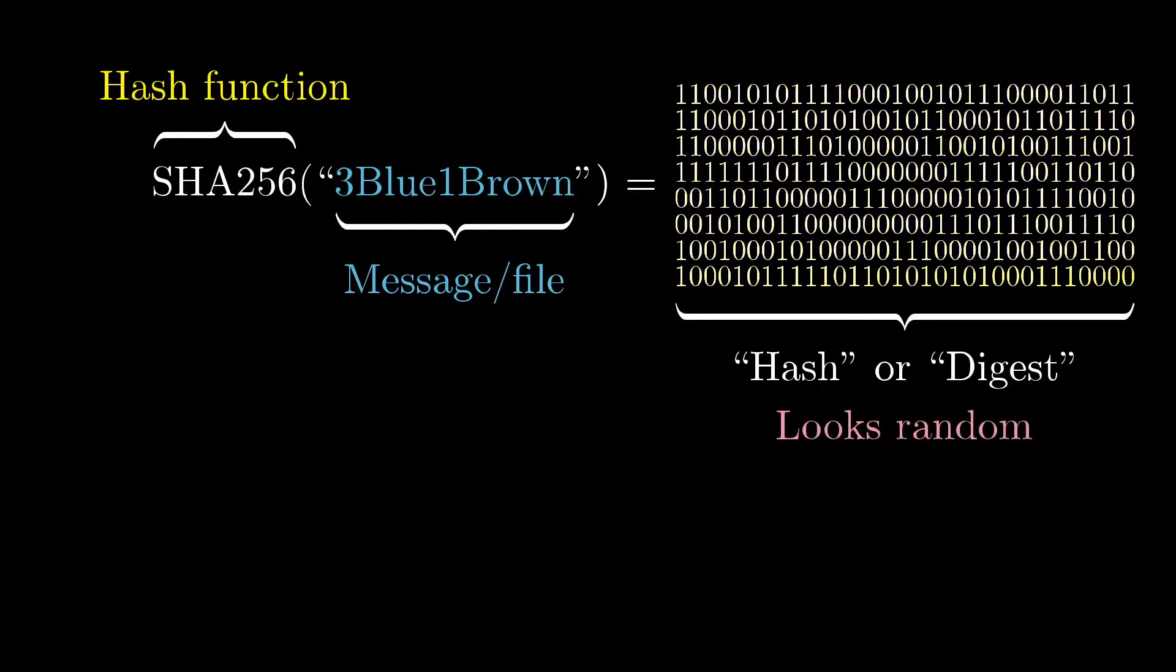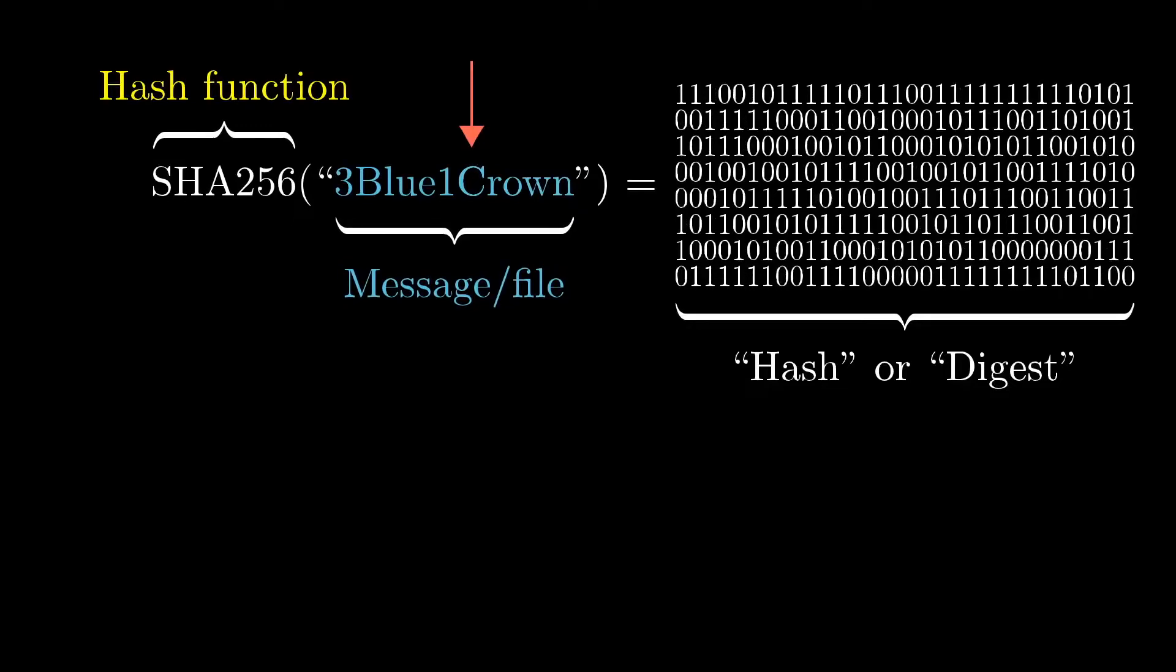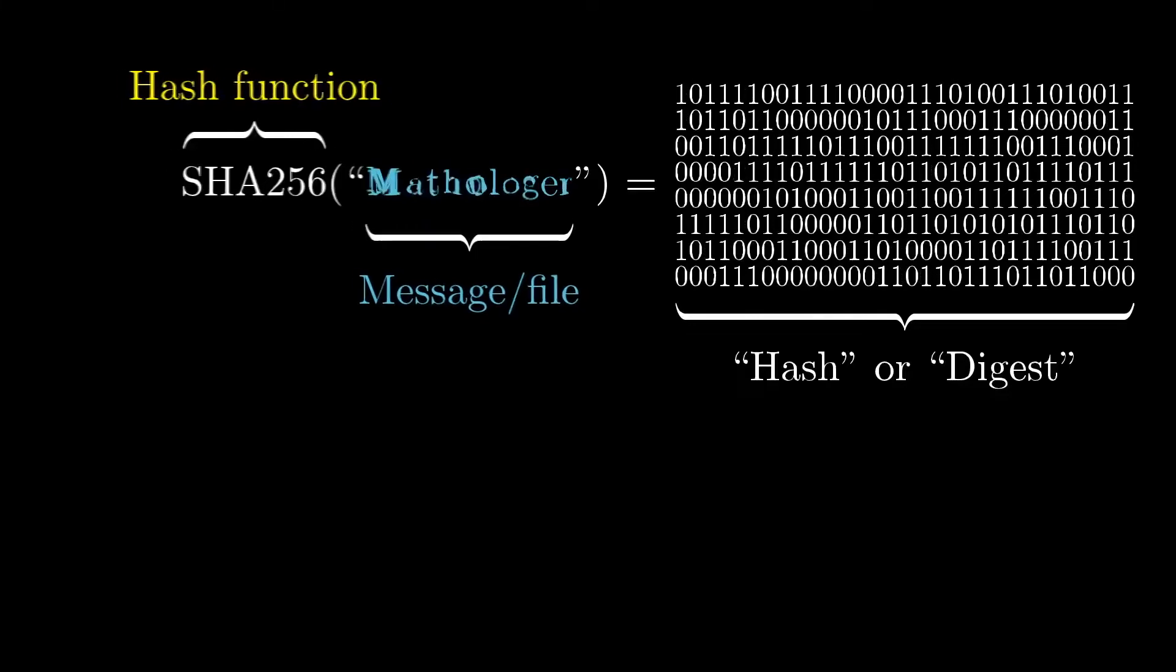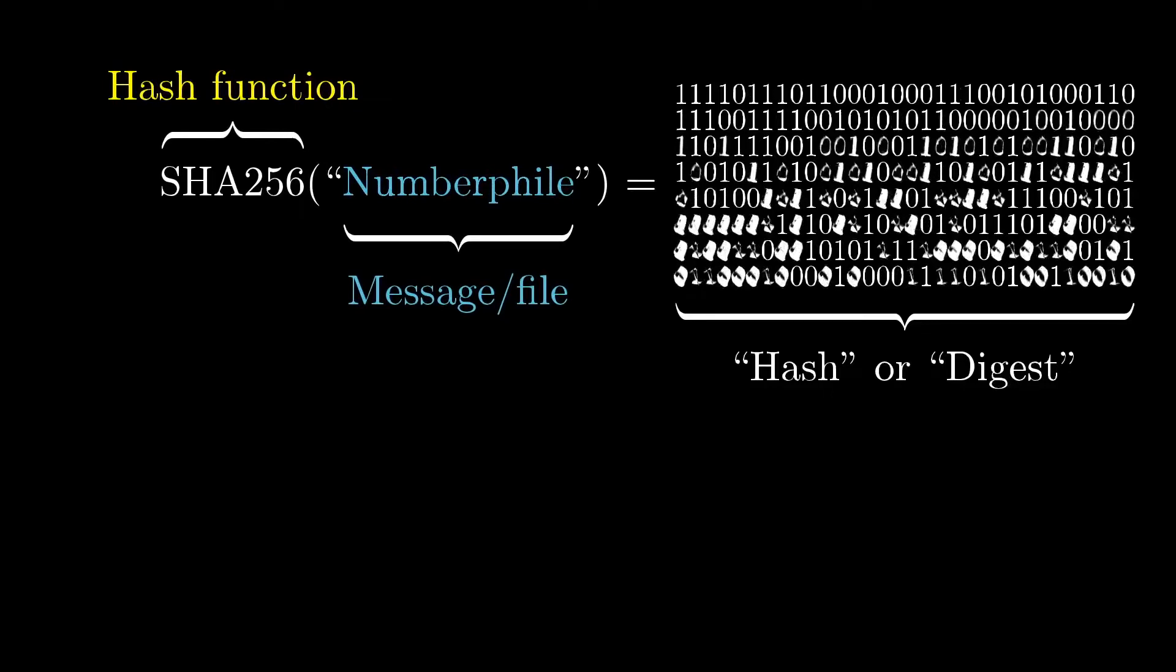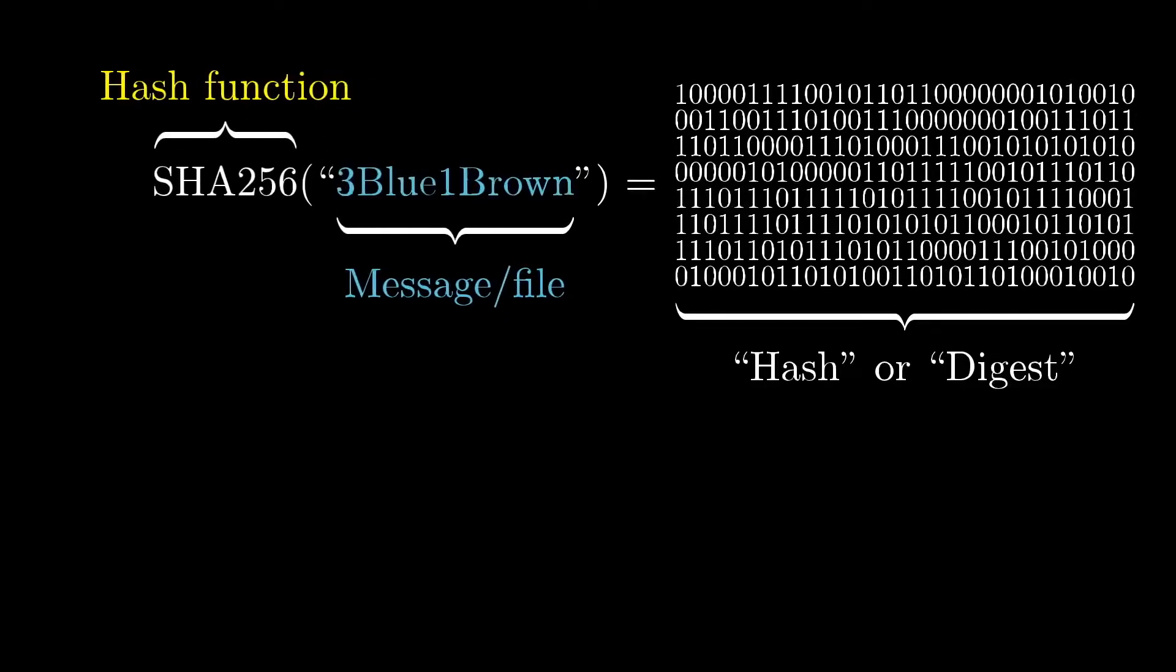In fact, for the hash function that I'm showing here, called SHA-256, the way the output changes as you slightly change that input is entirely unpredictable. You see, this is not just any hash function—it's a cryptographic hash function. That means it's infeasible to compute in the reverse direction.